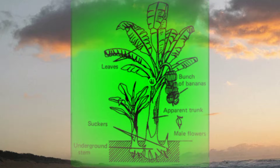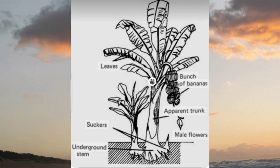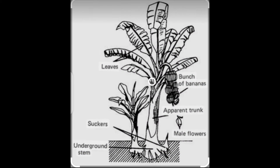Today we are going to be discussing Musa Paradisiaca, also known as plantain. As you can see, here is the plantain tree or plant. At the top right hand side is the bunch of bananas or plantain, which is the fruit. At the tip of the bunch is the main flower, which contains no reproductive organ unlike other plants.